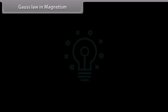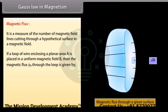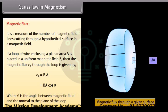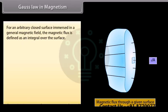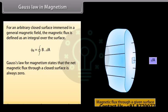Gauss's law in magnetism — Magnetic flux: It is a measure of the number of magnetic field lines cutting through a hypothetical surface in a magnetic field. If a loop of wire enclosing a planar area A is placed in a uniform magnetic field B, then the magnetic flux φ_B through the loop is given by φ_B = B · A = BA cos θ, where θ is the angle between the magnetic field and the normal to the plane of the loop. For an arbitrary closed surface, φ_B = ∮ B · dA. Gauss's law of magnetism states that the net magnetic flux through a closed surface is always zero: ∮ B · dA = 0. The SI unit of magnetic flux is Weber.